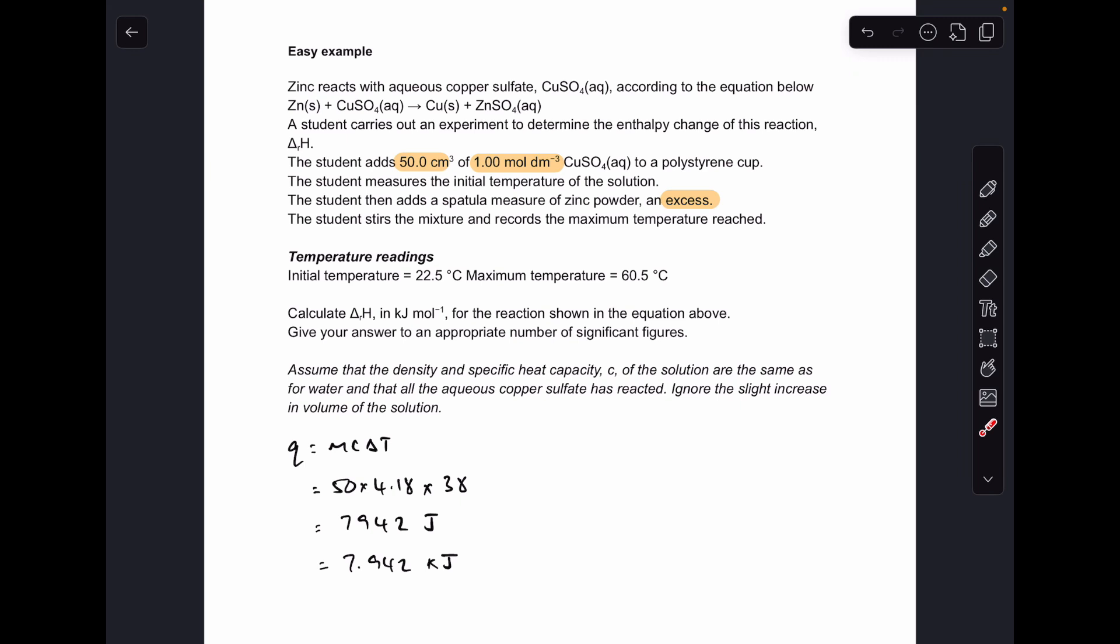And that temperature rise is 38 degrees C. So just the difference between those two temperatures. So that's given an answer in joules of 7942. And we're turning that to kilojoules because our final answer needs to be in kilojoules per mole.